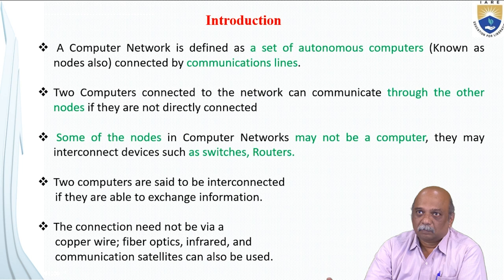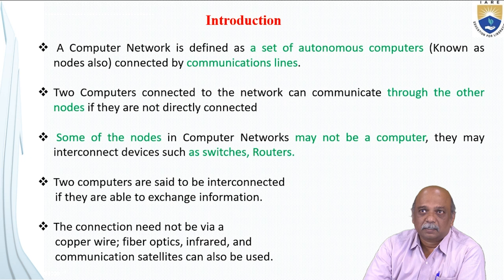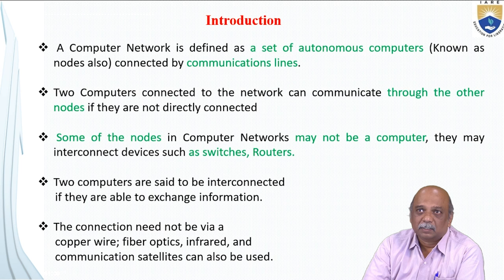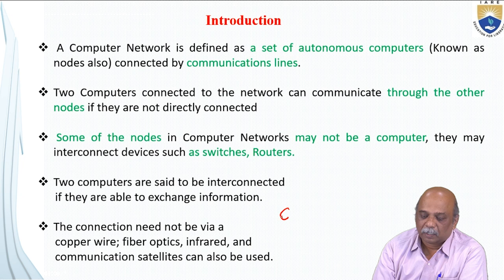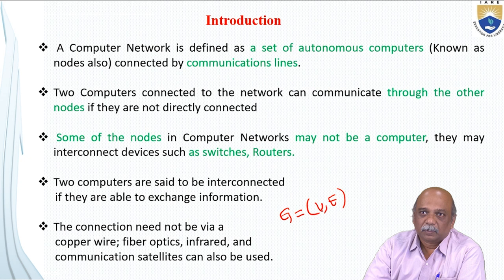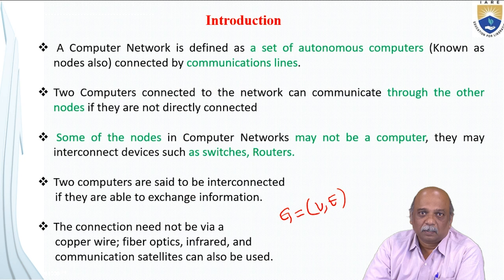Before going into details, we first define the meaning of a Computer Network. A Computer Network is defined as a set of autonomous computers connected by communication lines. These are also called Computer Nodes, interconnected using communication lines. The Computer Network is mathematically defined as G = (V, E), a graph model where V represents the set of vertices and E represents the set of edges — edges being communication links and vertices being autonomous computer nodes.